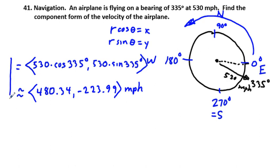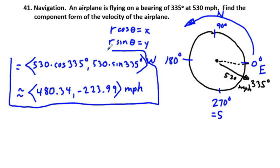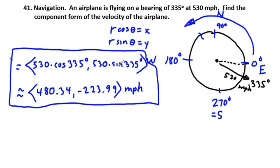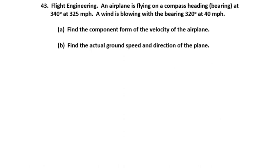Note that with the azimuth reading, 335° would be up near north, so the component signs would differ. But that's problem 41. On to problem 43.